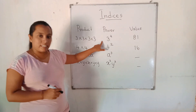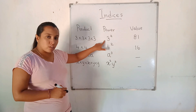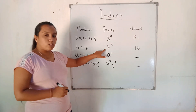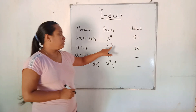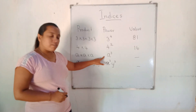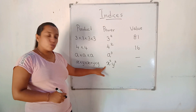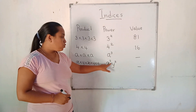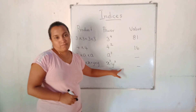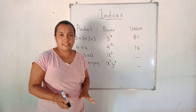Now let's look at the reading method for powers. We read: 3 to the power 4, 4 to the power 2, A to the power 3, X to the power 2, Y to the power 3. Now let's move on to the next part.